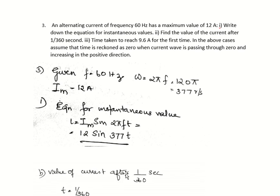Next question: an alternating current of frequency 60 Hz and maximum value 12 ampere — write down the equation for instantaneous values. Omega = 2πf = 2π × 60 = 120π. Substituting pi = 3.14, omega = 377 radian per second. The equation for instantaneous current is I = IM sin omega t = 12 sin 377t.